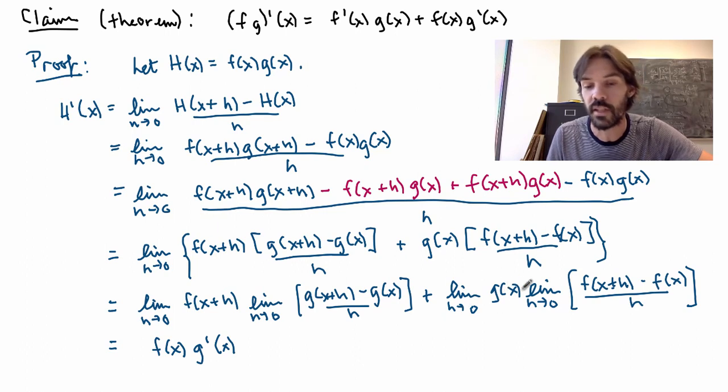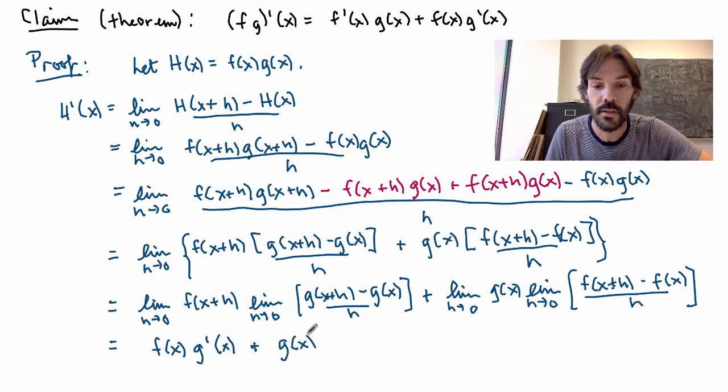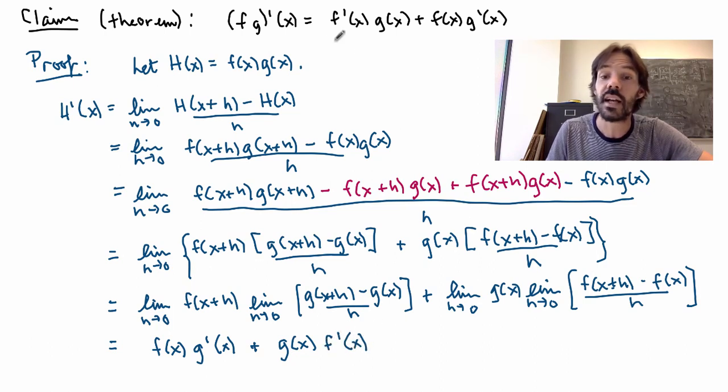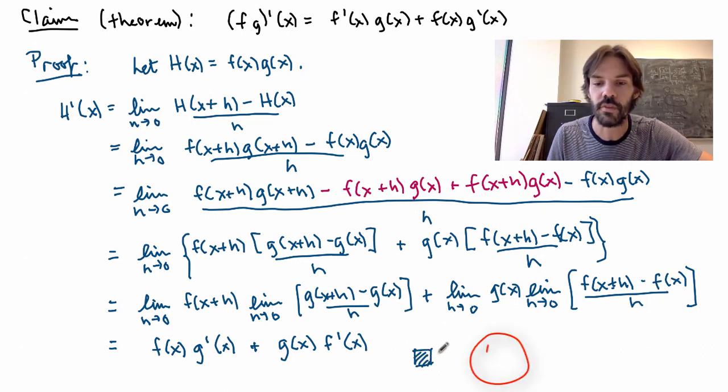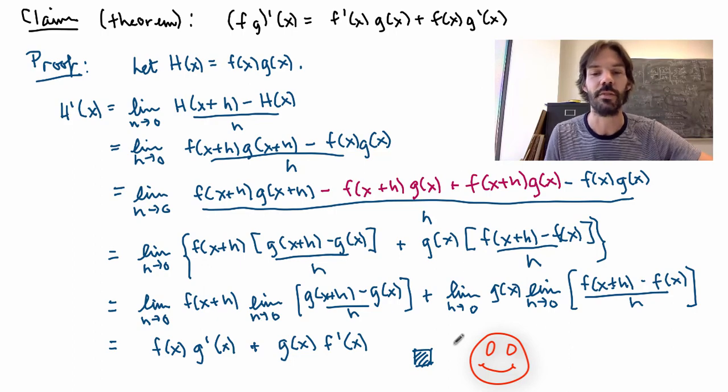And from this term here the limit as h goes to zero of g of x is just g of x itself, because it doesn't depend on h at all. So I get g of x. And this is the definition of the derivative of f. So this is what I get, which is exactly the right-hand side here. So what I've proved is that the derivative of capital H, which is really the derivative of the product here, is equal to this expression here, which is exactly the right-hand side here. So in mathematics when we finish the proof, we like to put a little square here, which just means that we're happy and we've finished the proof.